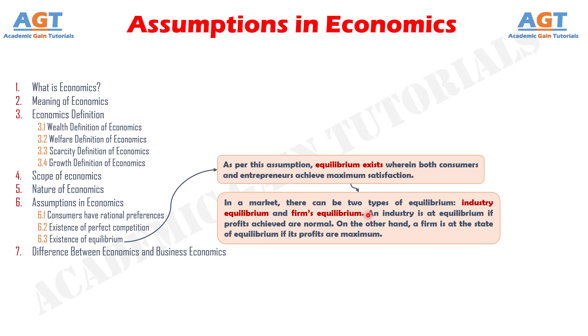An industry is at equilibrium if profits achieved are normal. On the other hand, a firm is at the state of equilibrium if its profits are maximum.